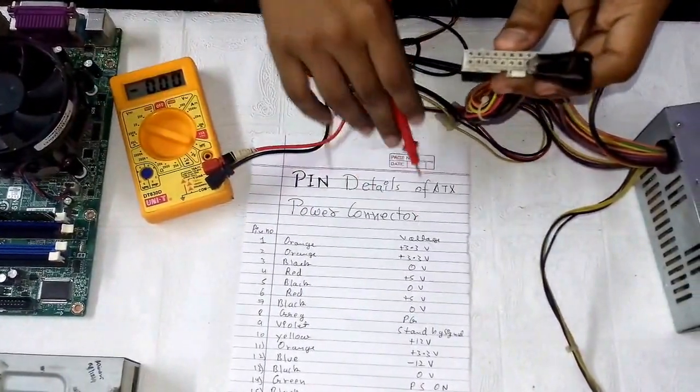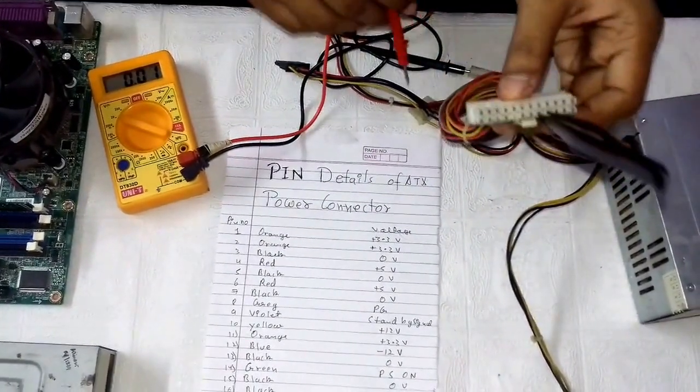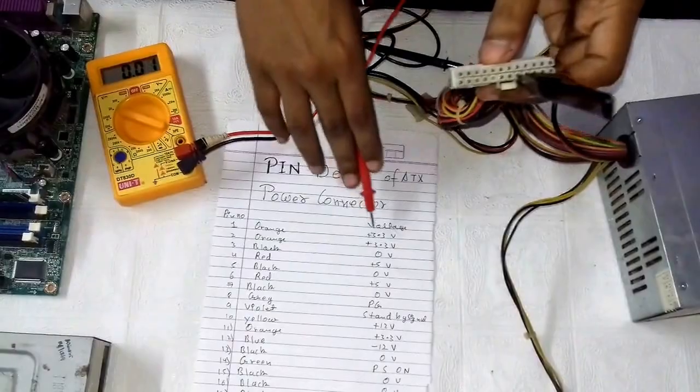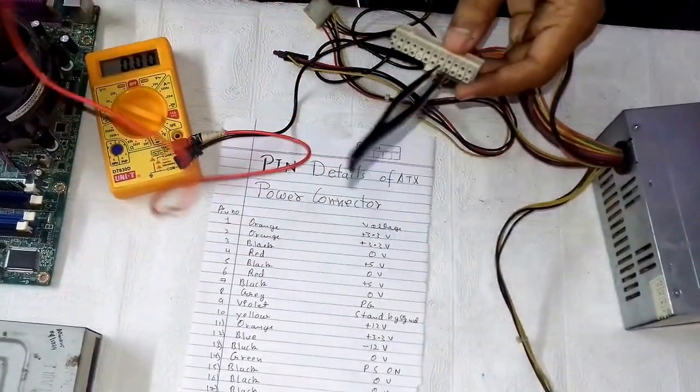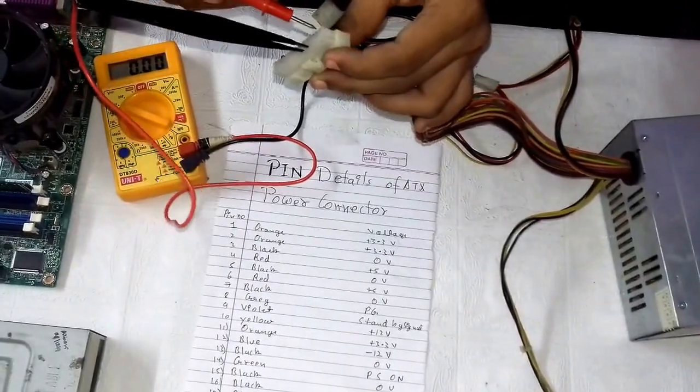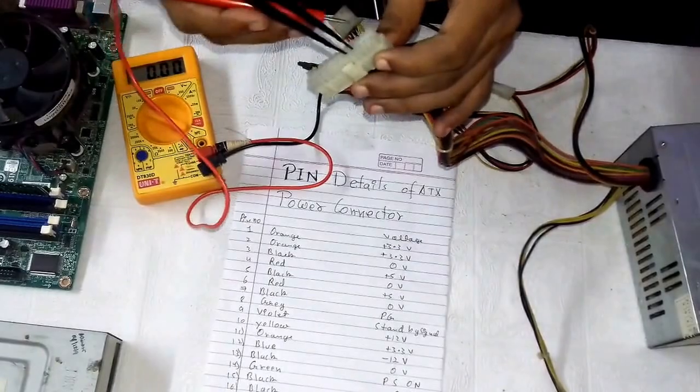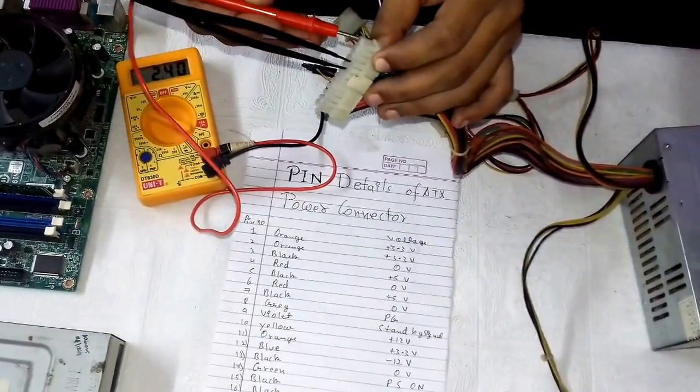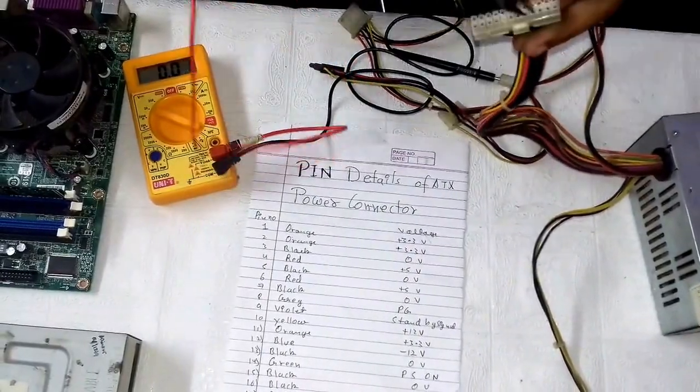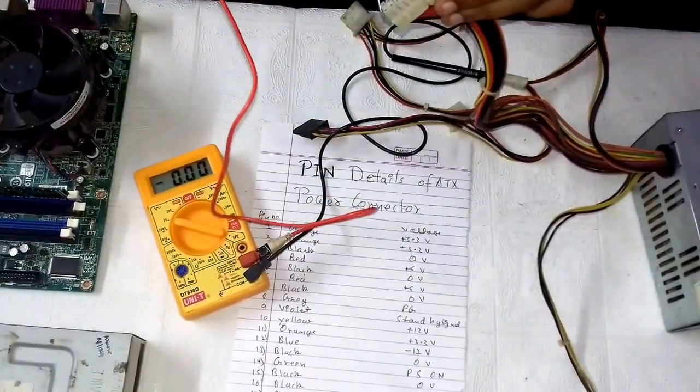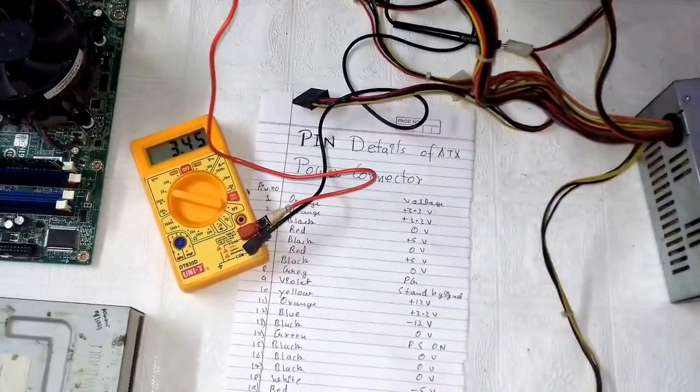Now first of all, check the voltage of orange. Please note that the voltage ranges may be minimized or maximized - around 3.3 to 3.5 volts is the acceptable range. Here is the orange wire. We inserted this probe into the orange one, and the reading is showing 3.45 volts. Yeah, it is in acceptable range.